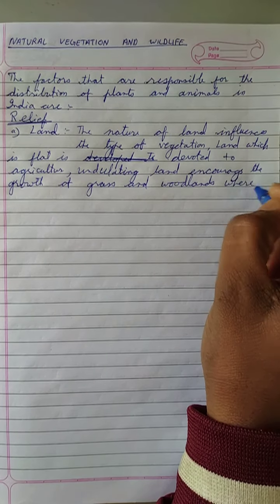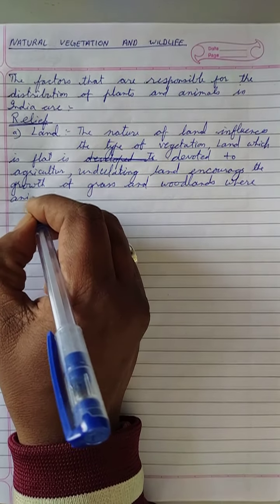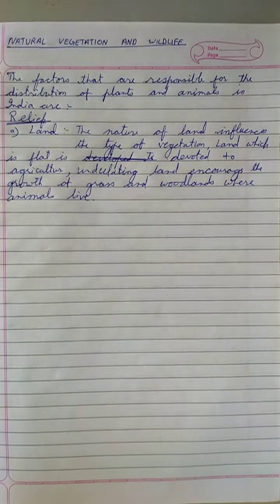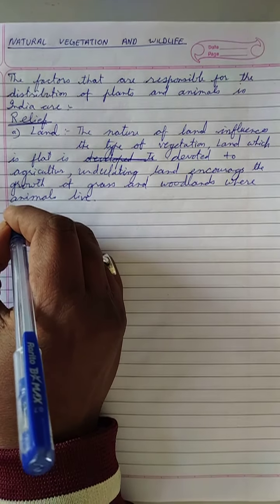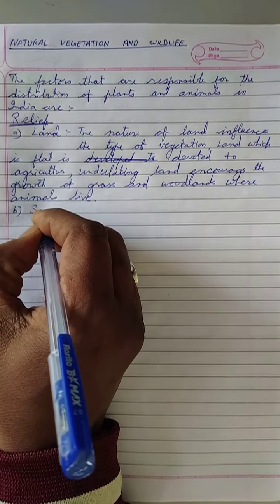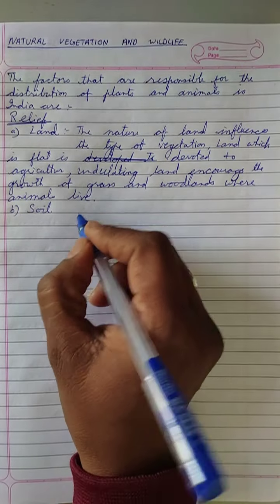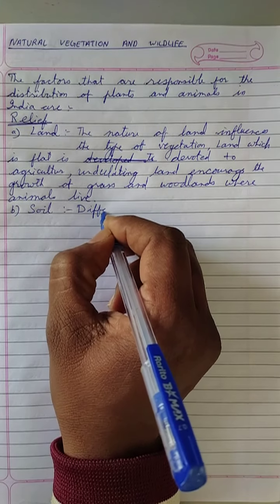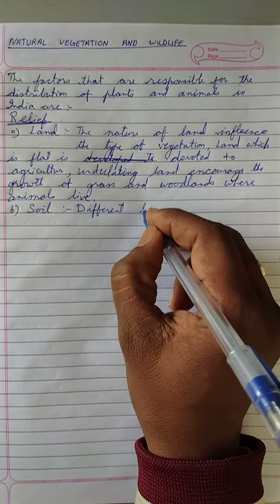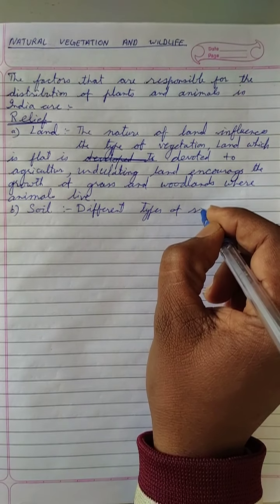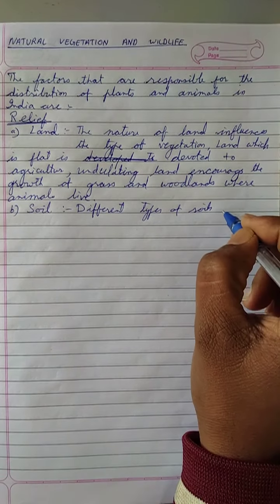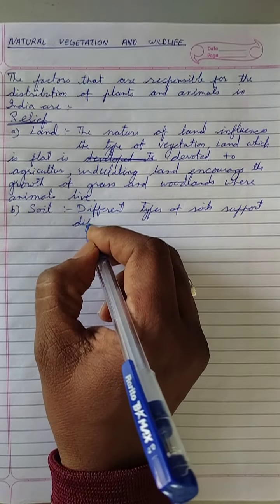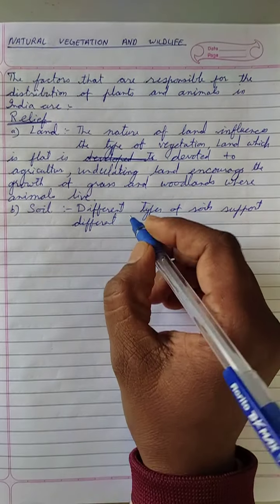Undulating land — meaning up and down land — encourages the growth of grass and woodland, where wild animals live. The second factor is soil. Different types of soils support different types of vegetation.